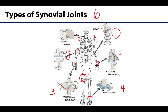Lastly, pivot joints — this will be the sixth type of synovial joint. A pivot joint will have a rounded or pointed articular surface articulating with a more ring-like articular surface or ring-like bone. These are uniaxial as well because you only have movement or rotation around a bone's own longitudinal axis. The atlantoaxial joint, located between the first and second cervical vertebrae, is an excellent example of a pivot joint — this is the joint that allows us to shake our head no.